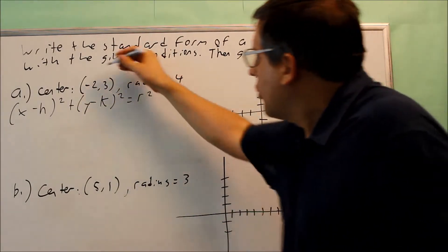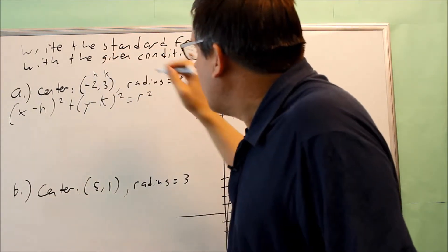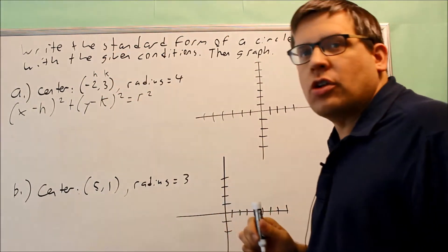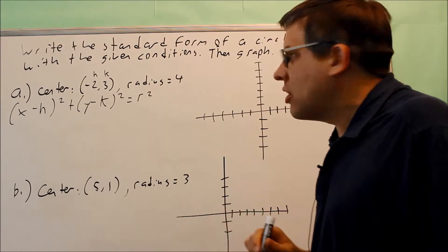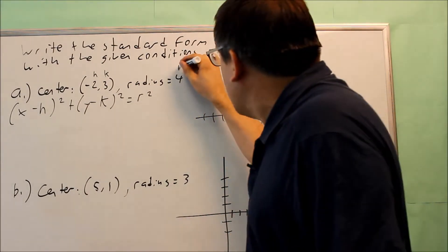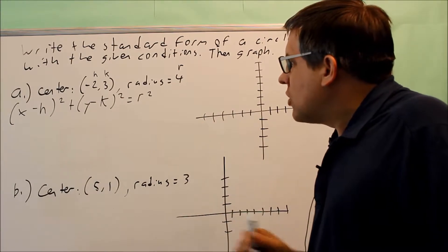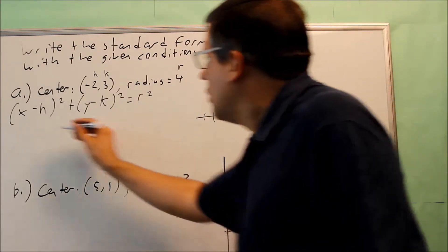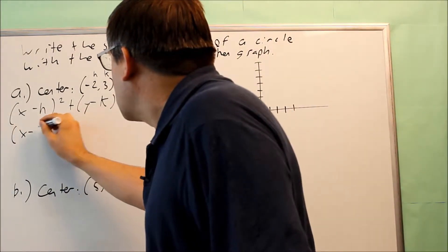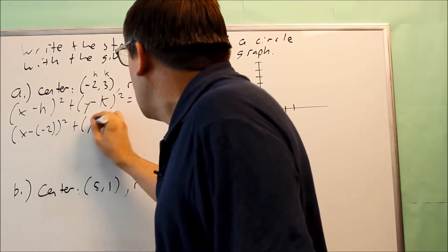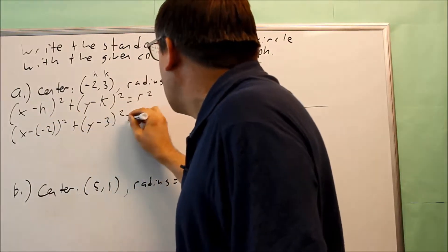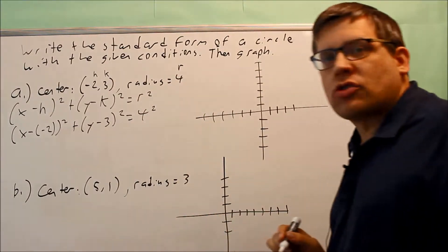The information that's provided for us is h and k - the x-coordinate is always h, the y-coordinate of the center is always k, and the radius is always your r. We're going to substitute the information into this formula. So I have (x - (-2))², (y - 3)², and that's going to equal 4².